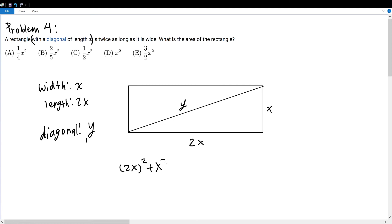So (2x)² + x² = y². Therefore, 4x² + x² = y². Therefore, 5x² = y². Now, what is the area of this rectangle?